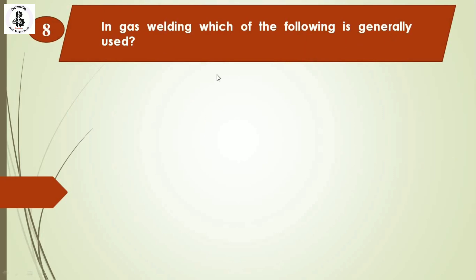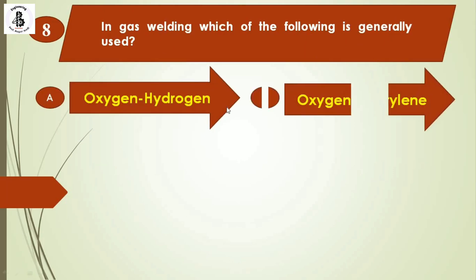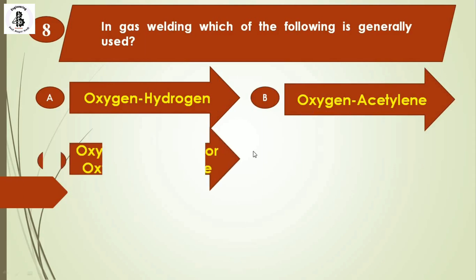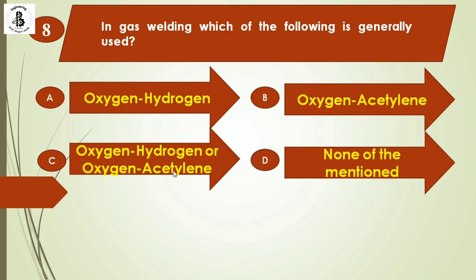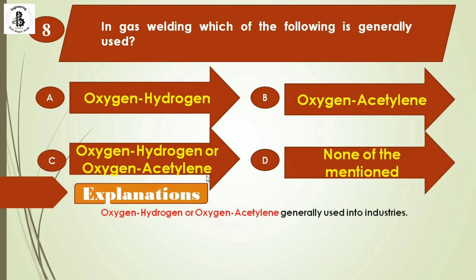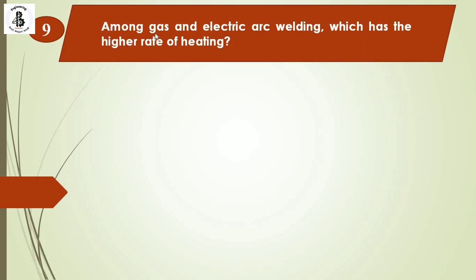Question 8: In gas welding, which of the following is generally used? Option A: oxygen-hydrogen, option B: oxygen-acetylene, option C: oxygen-hydrogen or oxygen-acetylene, option D: none of the mentioned. Both oxygen-hydrogen and oxygen-acetylene are generally used in industries. The right answer is option C.